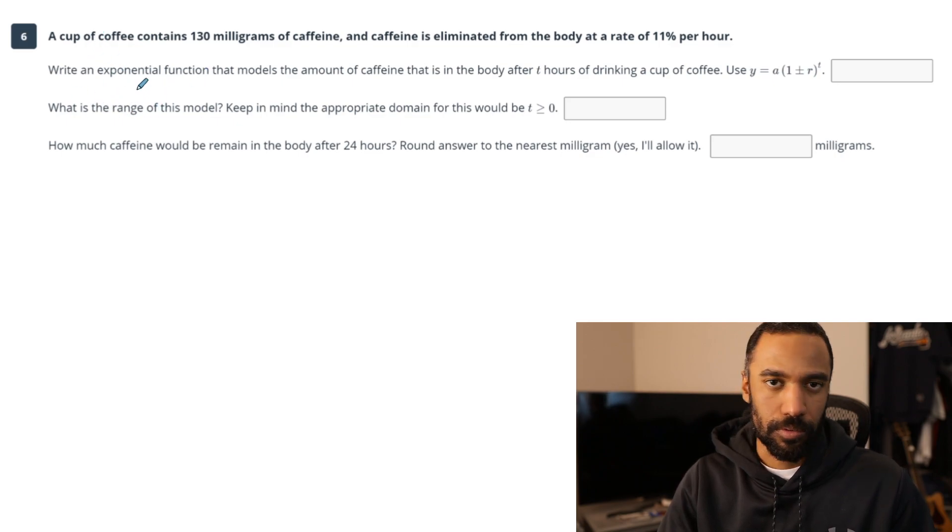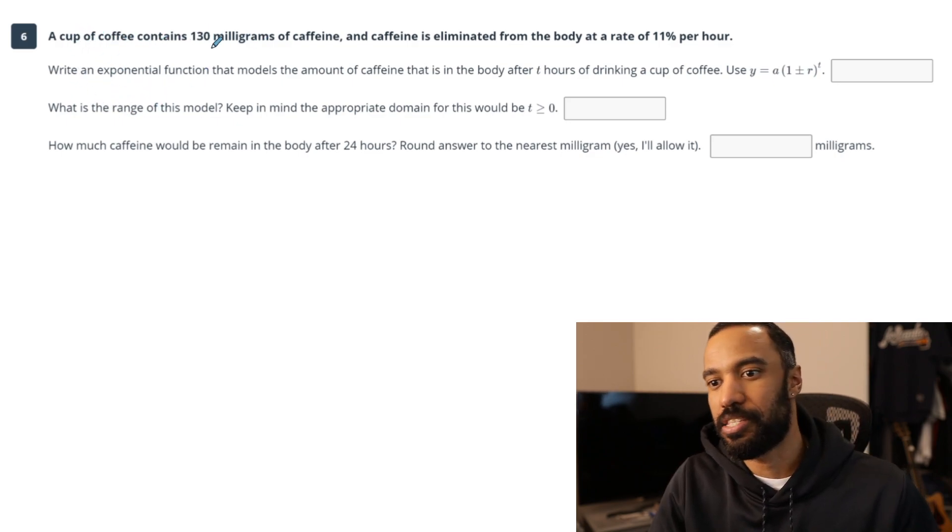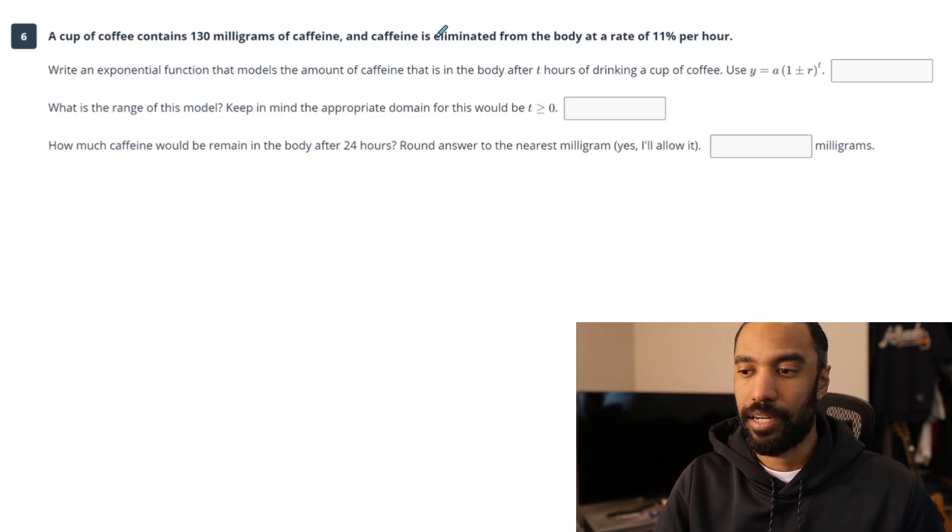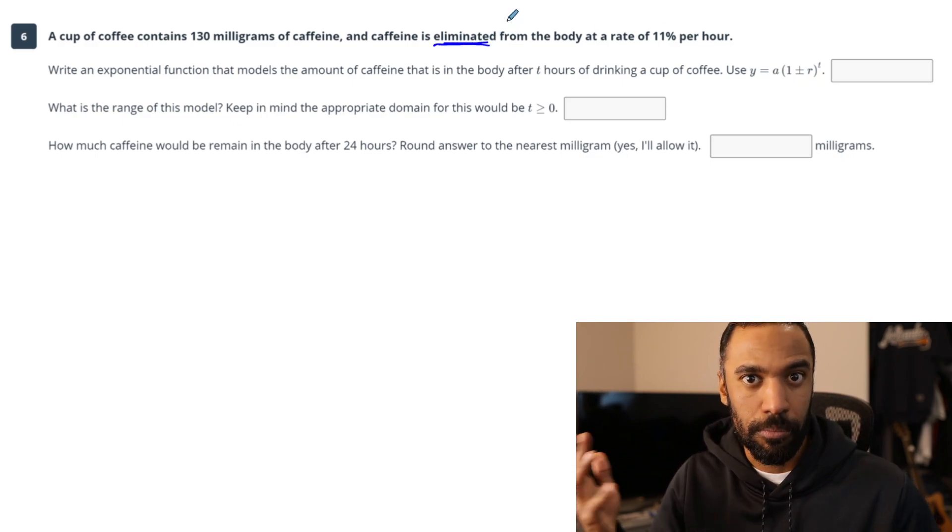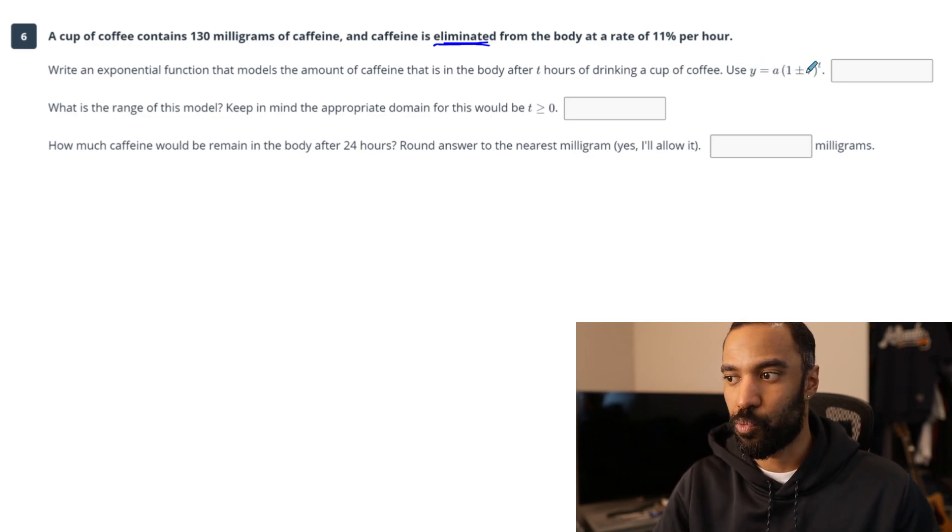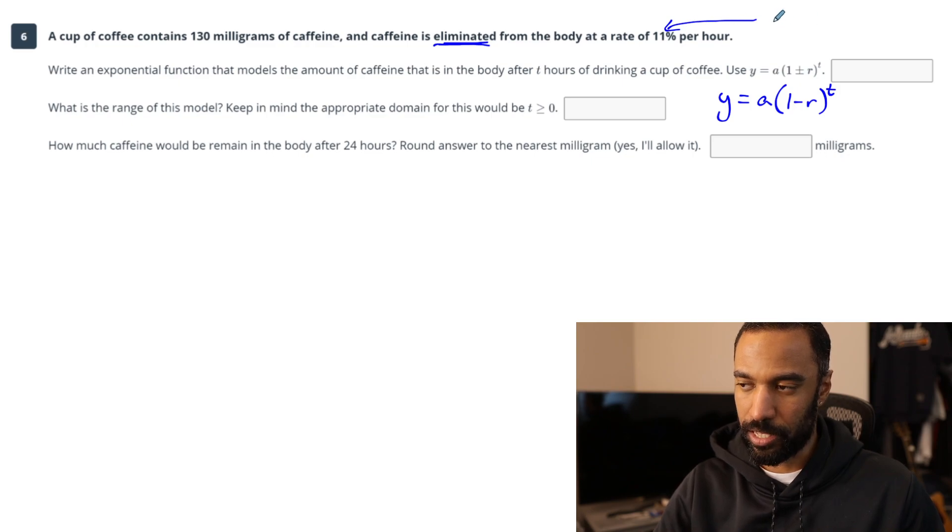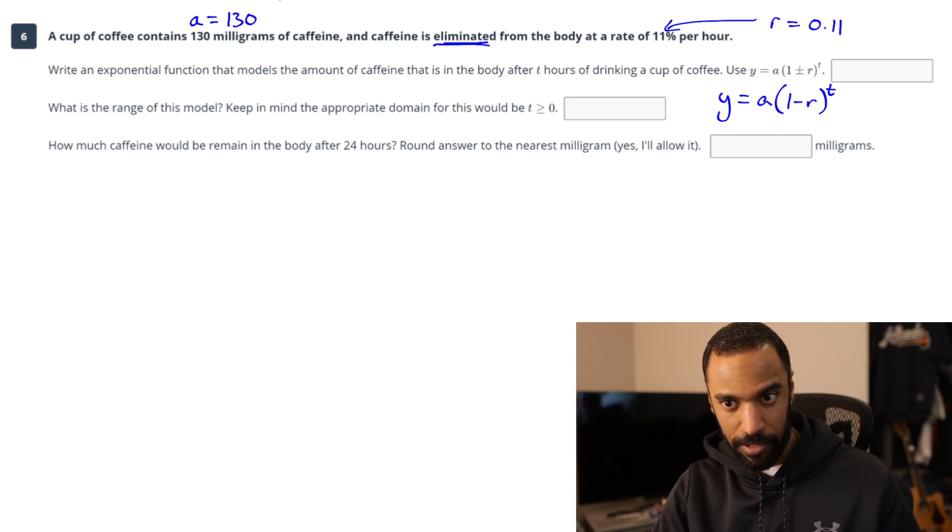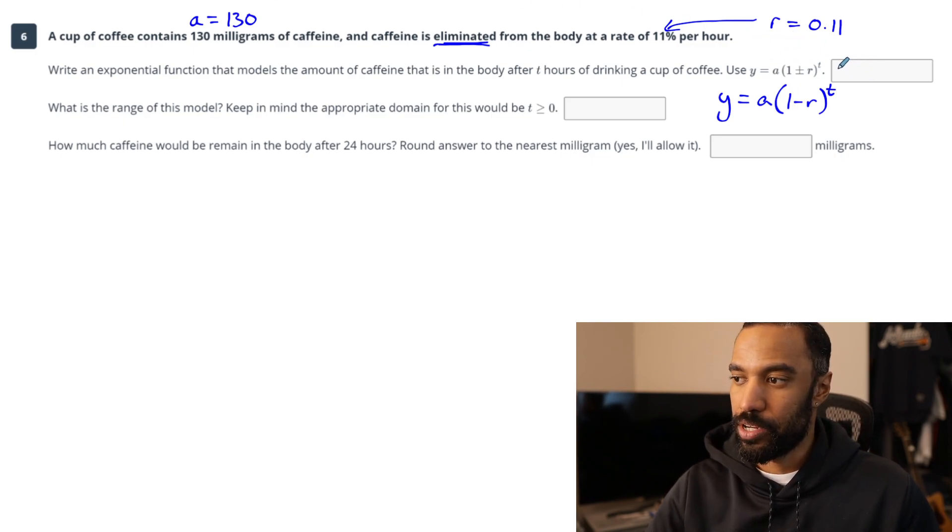Number six. This is a modeling exponential problem modeling equation. A cup of coffee contains 130 milligrams of caffeine, and caffeine is eliminated from the body at a rate of 11% per hour. Now, the word eliminated is a way of saying decreasing. You're removing it. So, when we use our y equals A times 1 plus or minus R to the T, we're going to use 1 minus R to the T power because we are taking away.